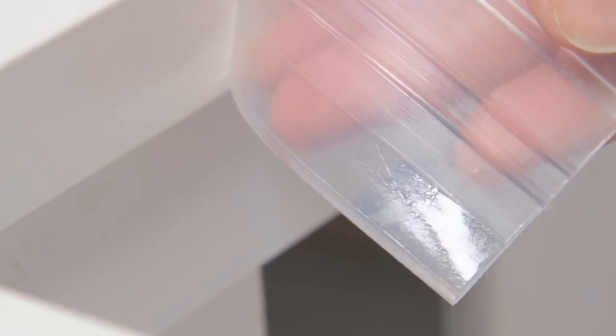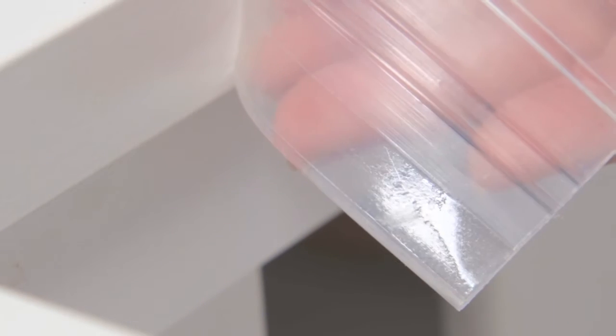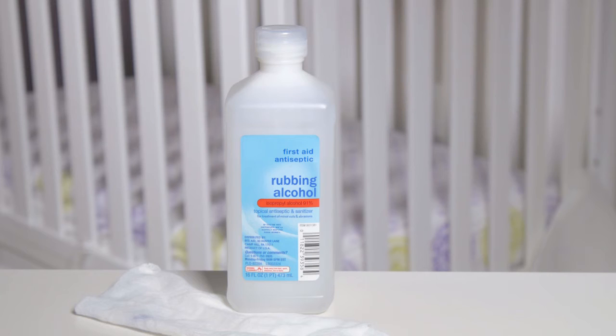It adheres easily to your crib with 3M tape along the edges. To attach, first clean the crib surface with rubbing alcohol and allow it to dry. This is important.